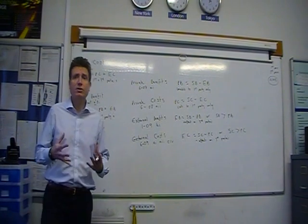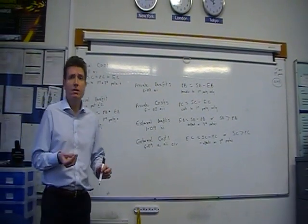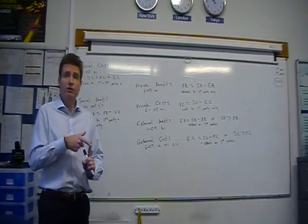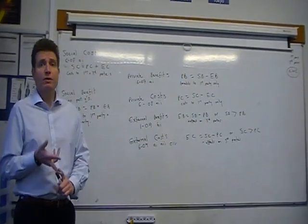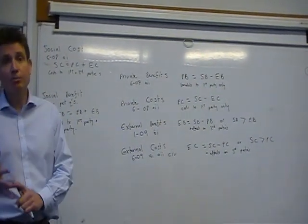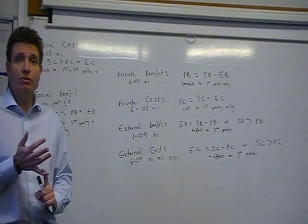So what we're going to look at is basically six concepts, and these are private benefits and private costs, social benefits and social costs, external benefits and external costs.